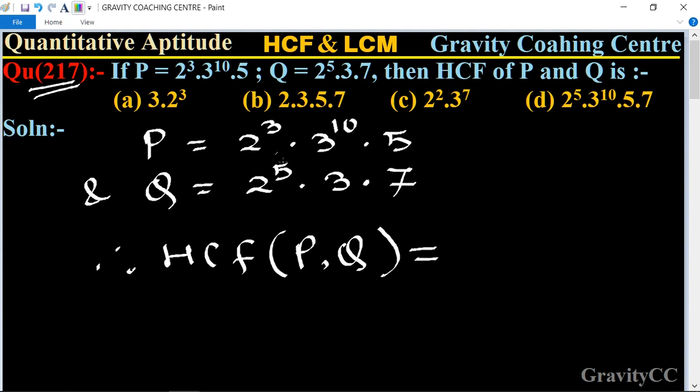So here common factors are 2 and 3, and the least degree of 2 is 3, and least degree of 3 is 1. So that means 3 dot 2 to the power 3, which is the required answer. So option A is the correct answer.